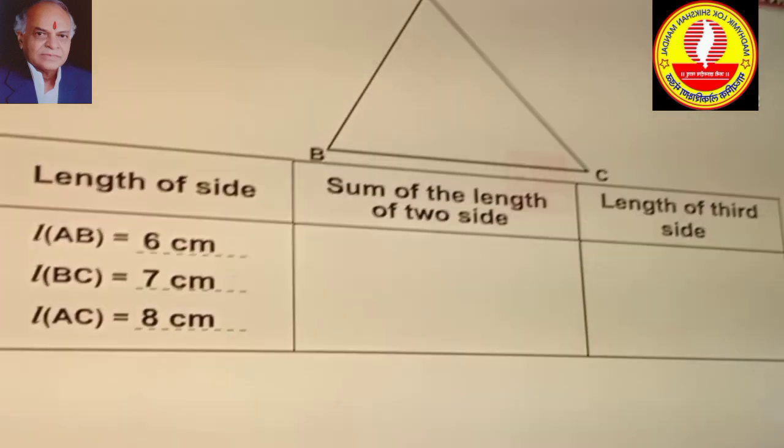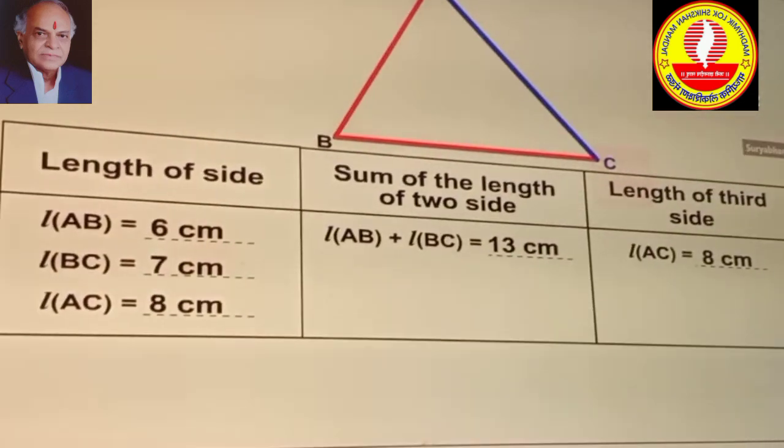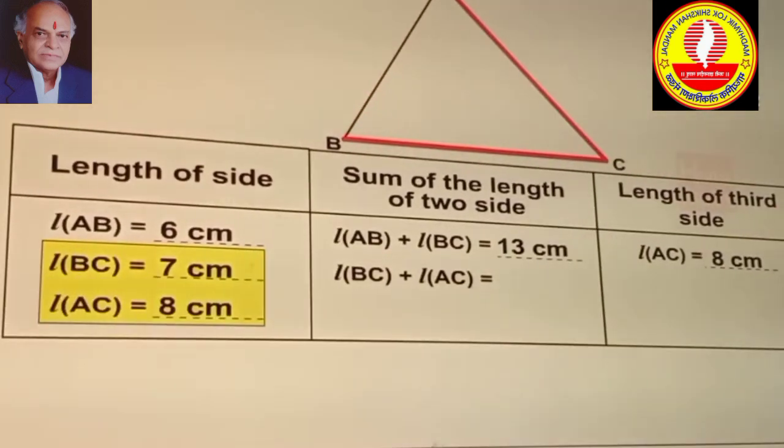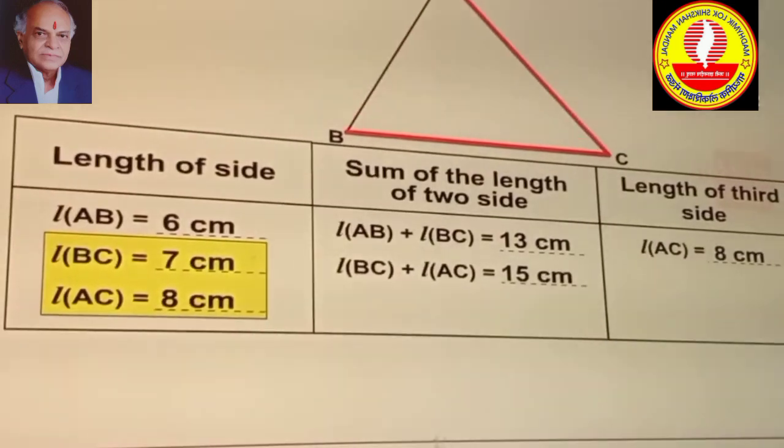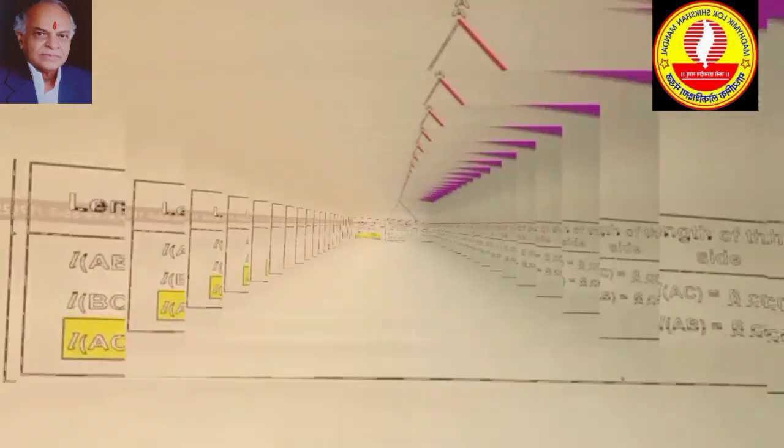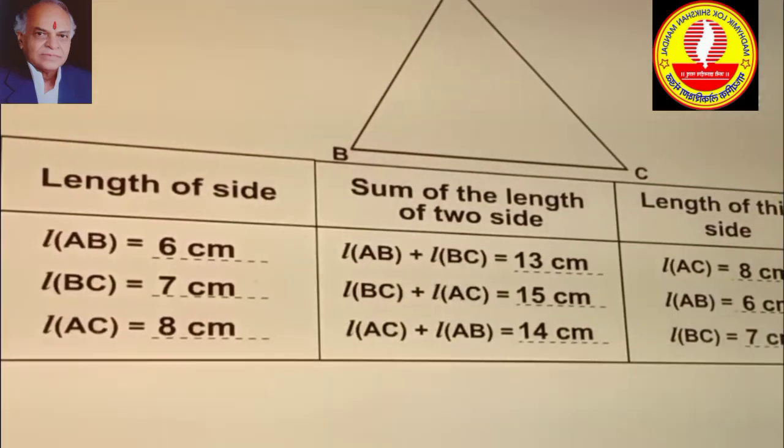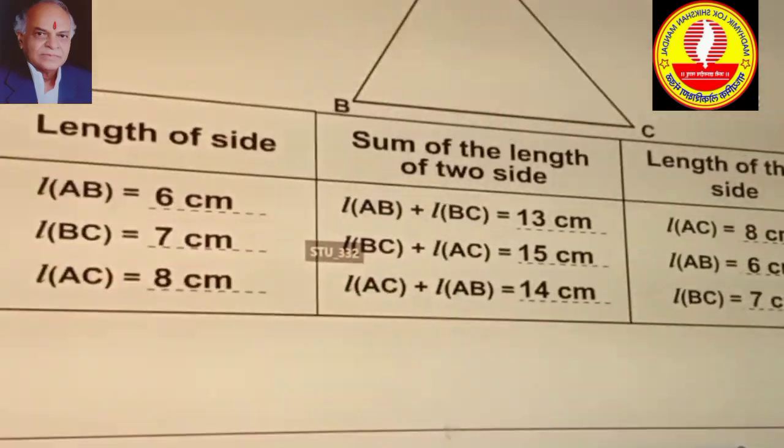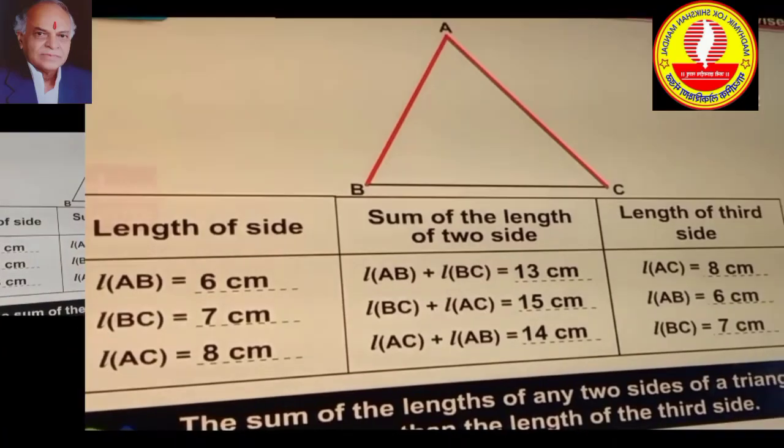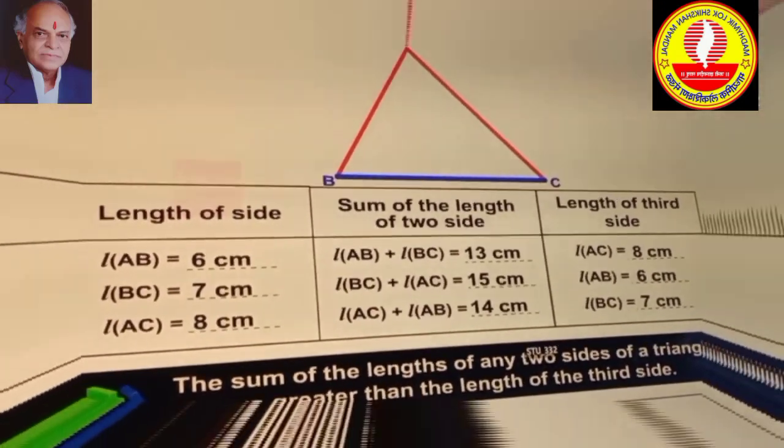Length of the sum of two sides AB and BC is greater than the remaining third side AC. Sum of sides AC and AB is greater than the remaining third side BC. From the above table we observe the following property about the length of a triangle. The sum of any two sides of a triangle is always greater than the length of the third side.